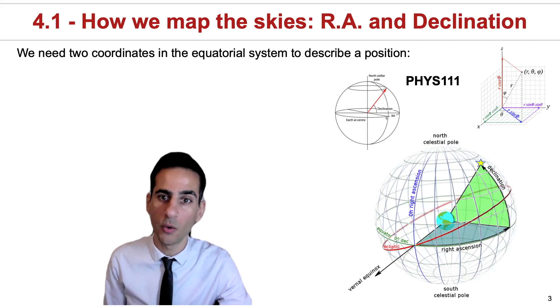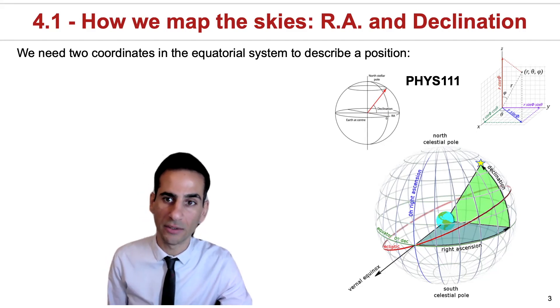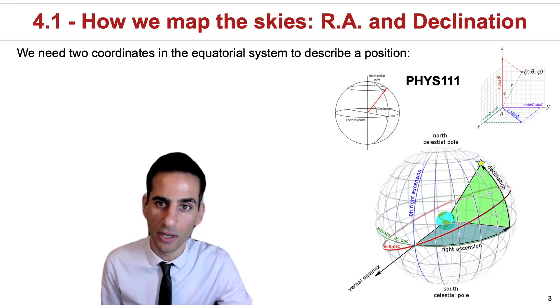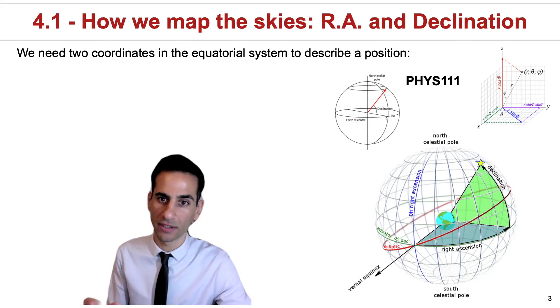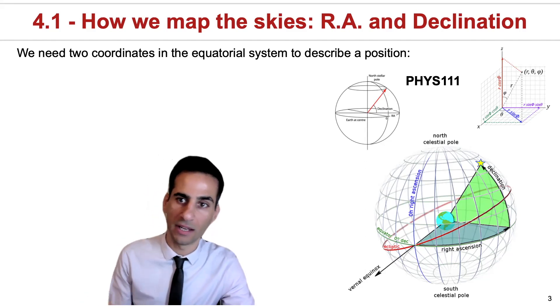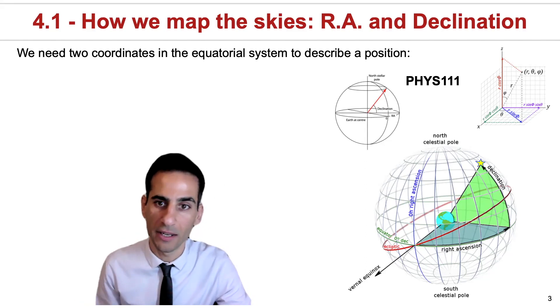Most of the time we don't even need to know the distance, and therefore we typically define the coordinates as theta and phi.